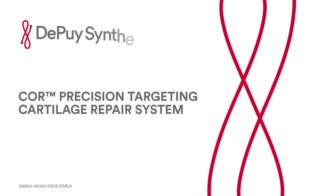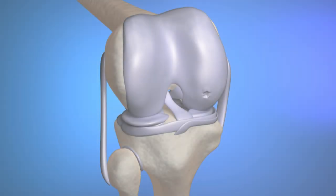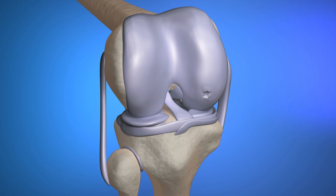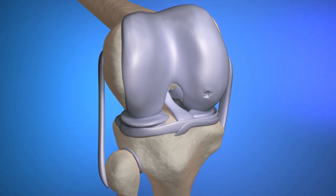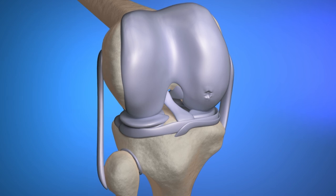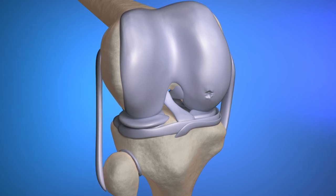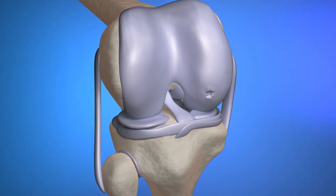Core Precision Targeting Cartilage Repair System. The Core Precision Targeting Cartilage Repair System is designed to surgically treat full thickness femoral articular cartilage lesions via autograft or allograft transplantation.